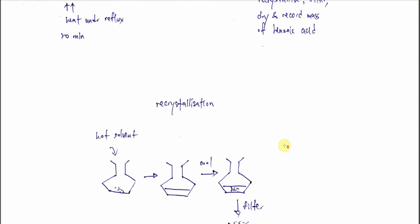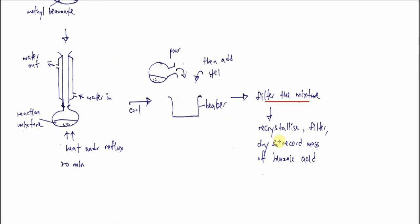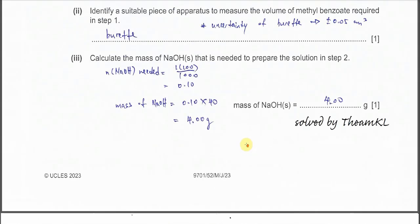Recrystallization is used to purify the solid. We have the solid from filtration; to purify it we add a hot solvent — in this case water — to dissolve the solid to form a clear solution. Then we allow the solution to cool. While cooling, the solid reforms as crystals — this is the recrystallization process. Once the solid forms, we filter again, wash, dry, and get the mass of the precipitate. This is how we obtain the purified benzoic acid.